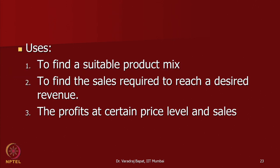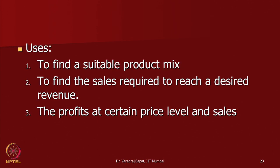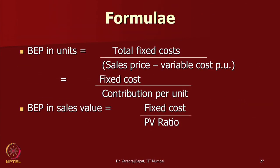We also discussed BEP analysis. For calculating BEP in unit terms, our target is to earn enough to cover fixed cost. So fixed cost is in the numerator, divided by contribution per unit — FC divided by contribution per unit. Always keep in mind that fixed cost is not per unit; fixed cost is a total. There is no sense having fixed cost on a unit basis. It is total fixed cost to be recovered from a certain number of units, so we divide it by contribution per unit.